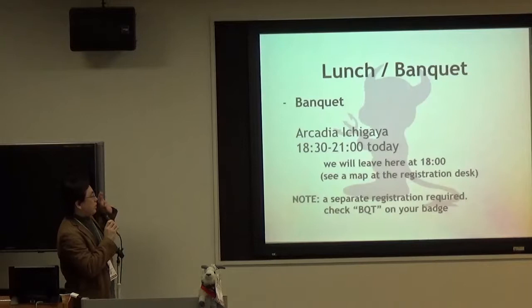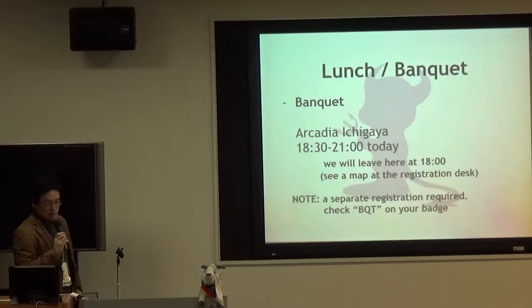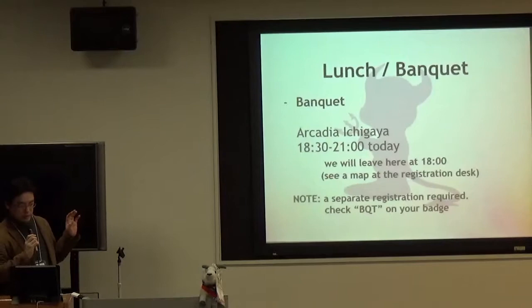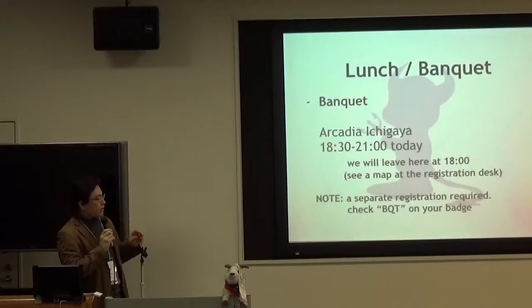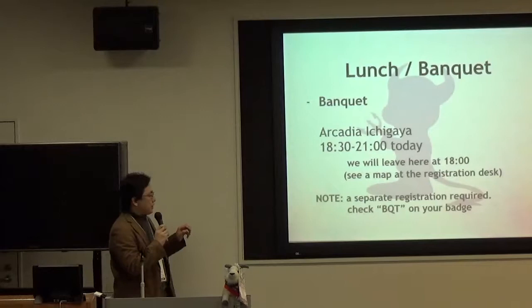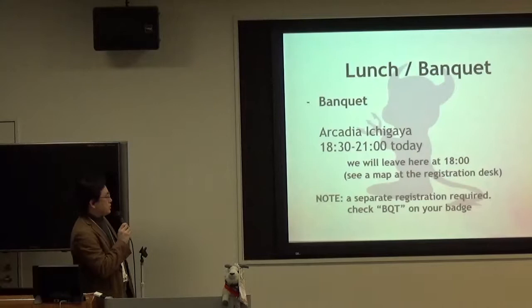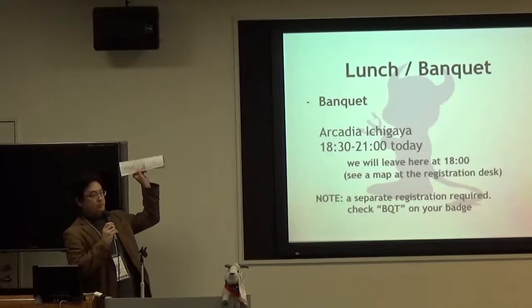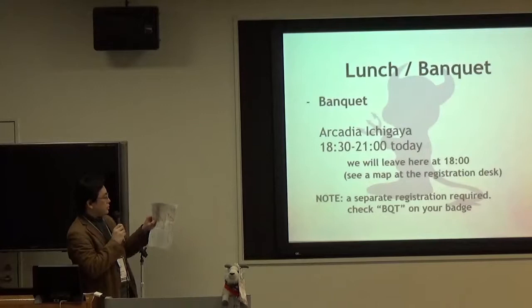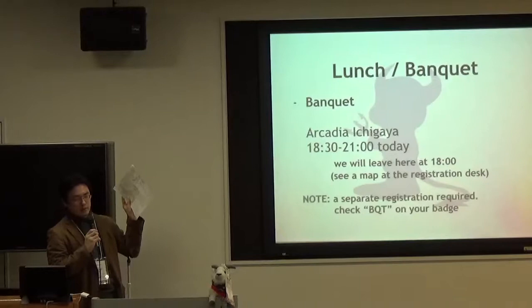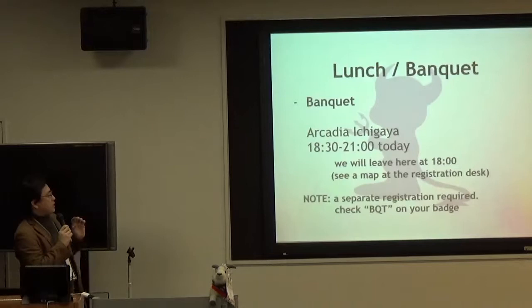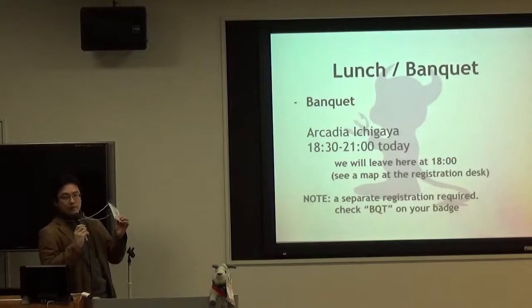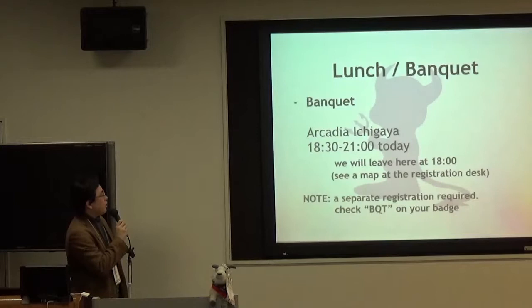The banquet will be held at the reception hall in Akari Ichigaya. Akari Ichigaya is located near Ichigaya station, which is located a short distance from here. We will leave here at 6 p.m., so please wait around the registration desk. You can receive a map from the registration desk to the banquet venue. Please note that the banquet requires a separate registration — please check your badge. If your badge has a BQT mark, you can join the banquet today.